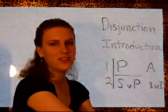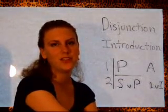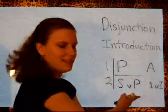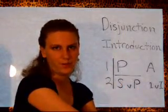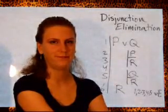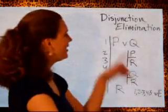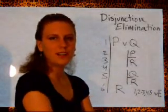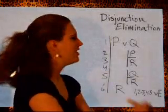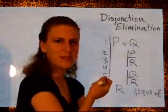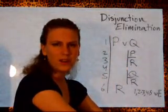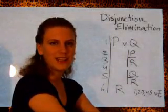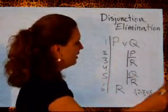Now that we've seen disjunction introduction, let's take a look at disjunction elimination. That one is going to be a little bit more complicated, but it works off the same idea — that at least one of the pieces is true. Here is the disjunction elimination rule. What it tells us is that, say on a line we have a disjunction, in this case P or Q, and we want to get a piece of information out of it. The disjunction itself is kind of hard to work with because we know one of the pieces is true but we don't know which one. So what we can do is make our own assumptions and experiment with each piece.